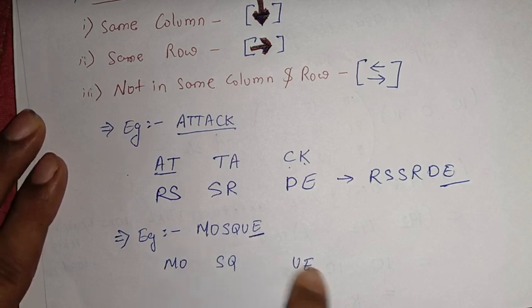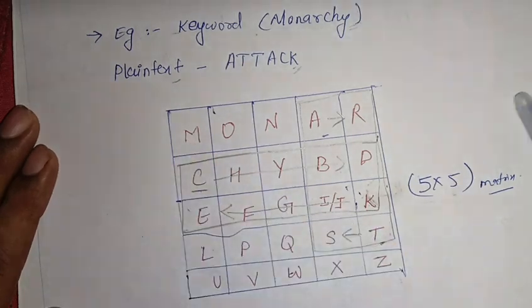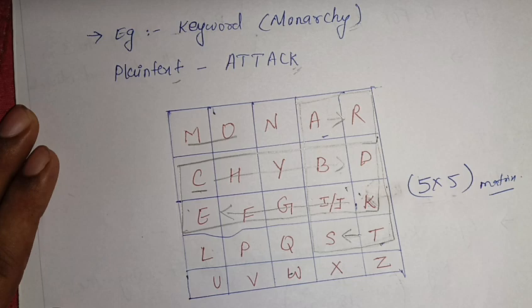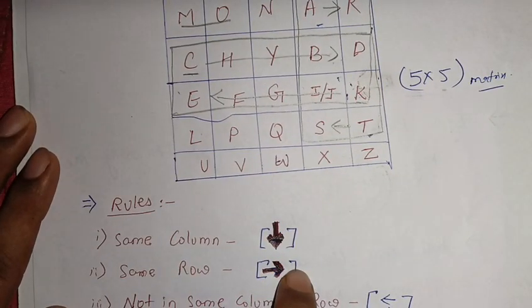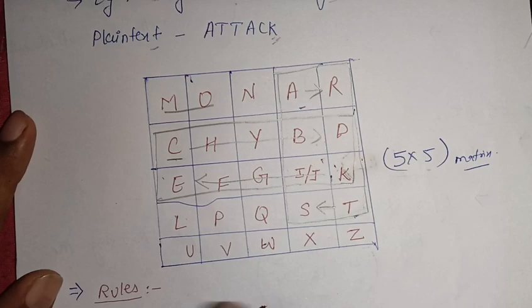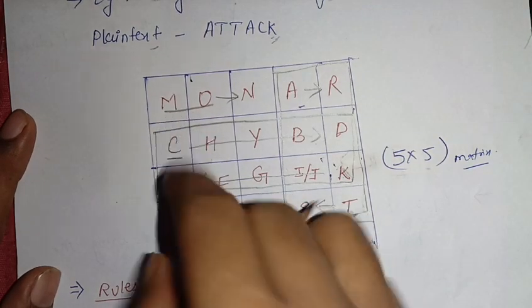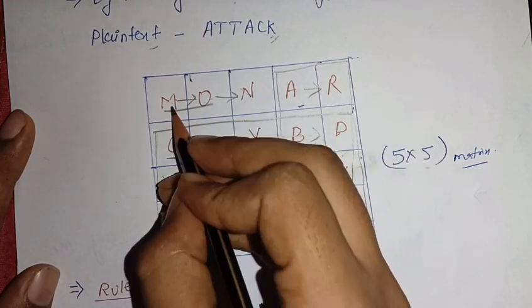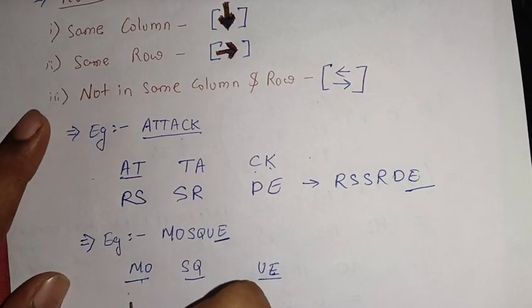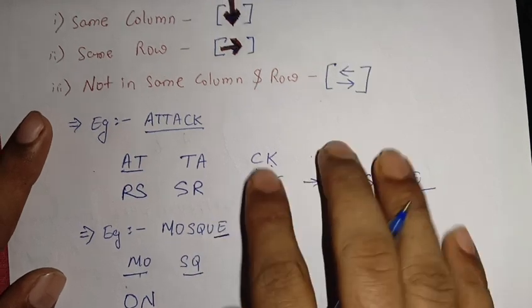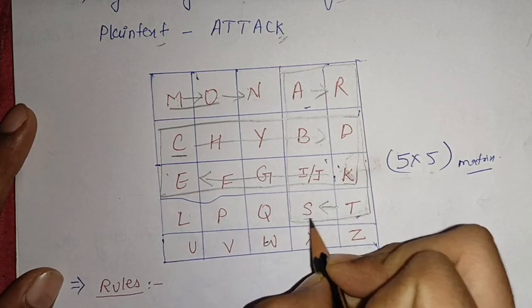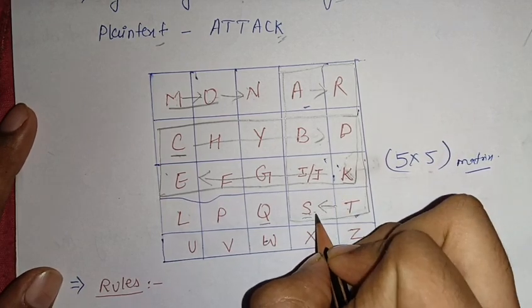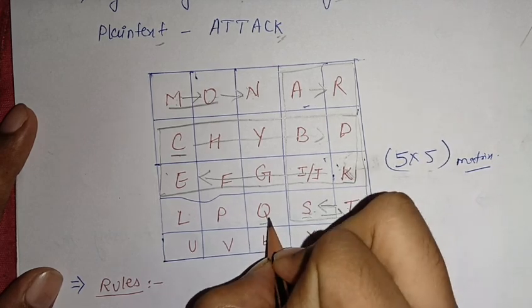For the pair MO, we check the matrix and find M and O are in the same row. When letters are in the same row, we shift forward. Moving forward from M gives O, and moving forward from O gives N. So MO encrypts to ON. For the pair SQ, S and Q are also in the same row. Moving forward from S gives T, and from Q gives S, so SQ encrypts to TS.